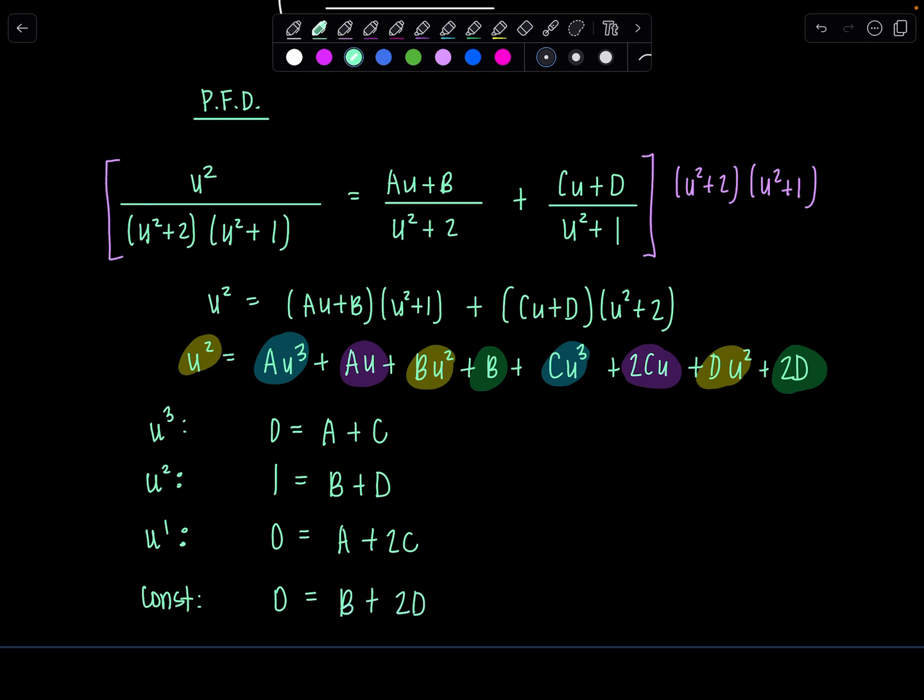It's not really as bad as it looks because we have two systems of two equations. I have two equations with only a and c, and two equations with only b and d. If you number them, say this is one, two, three, four, I'm going to take equation three and subtract from it equation one, because then a will cancel out, and then I end up with zero equals c.